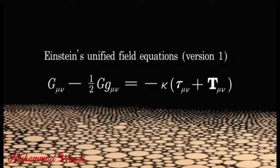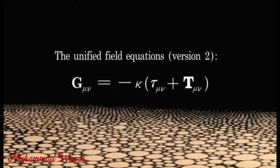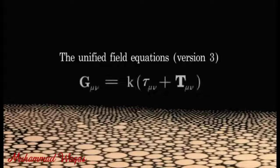The unified field equation can be simplified further. We can do this by reducing all the mathematical terms representing the gravitational field component on the left side into a single vector term — let's call this term G_μν. G_μν is a vector term containing multiple partial differential equations. For further simplification, we absorb the minus sign into a new constant called K. This is the simplest presentation of the unified field equation.